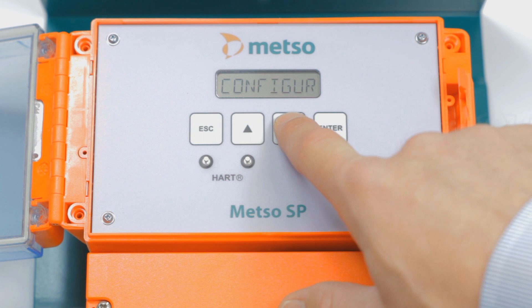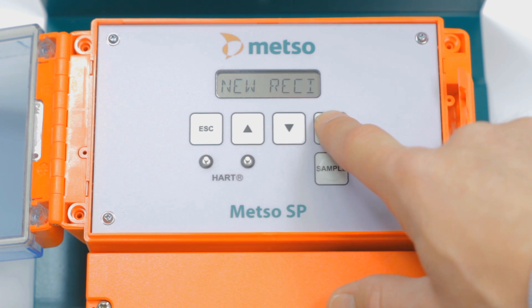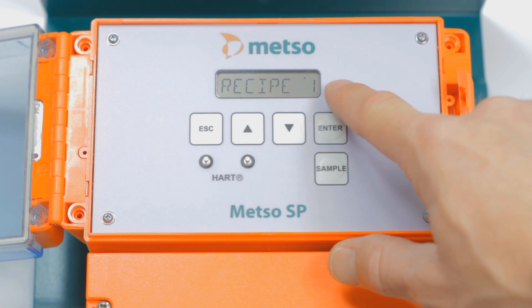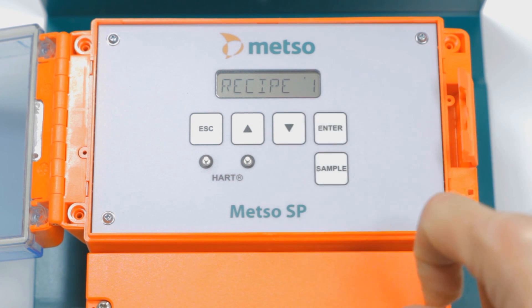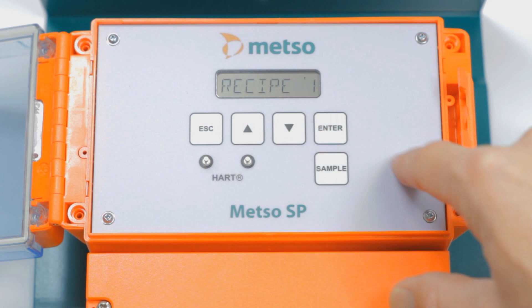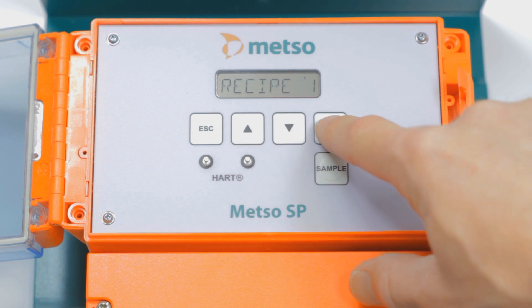And next, we're going to go to calibration. We hit enter to go into the calibration. Under the new recipe submenu, hit enter. Recipe 1. The unit has capability of having eight different calibrations or eight different recipes. Obviously, we're just going to have one calibration in this example.